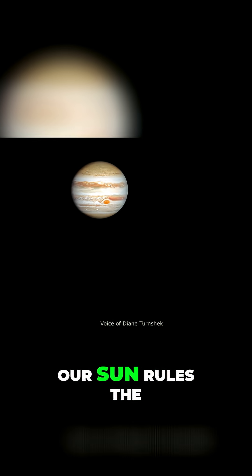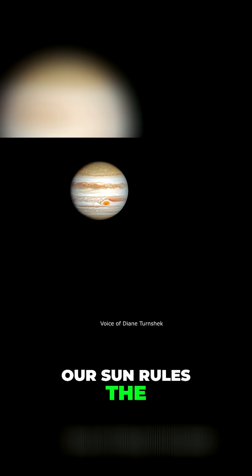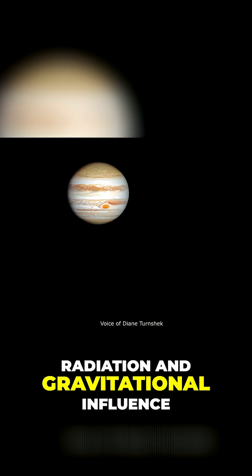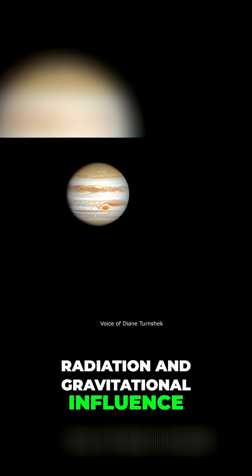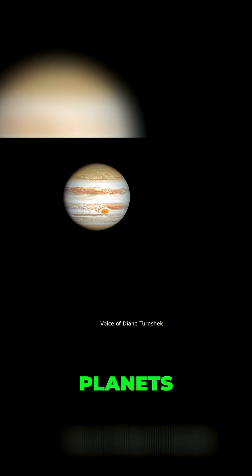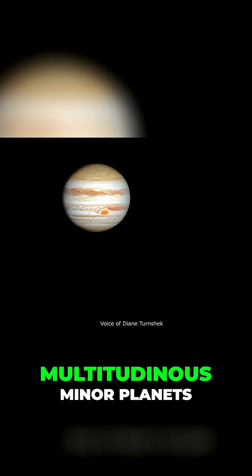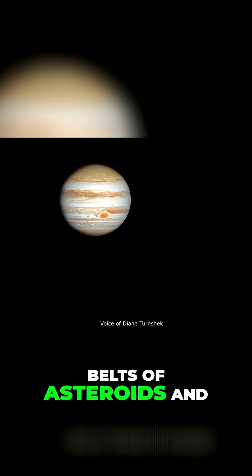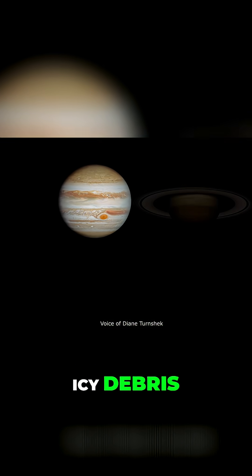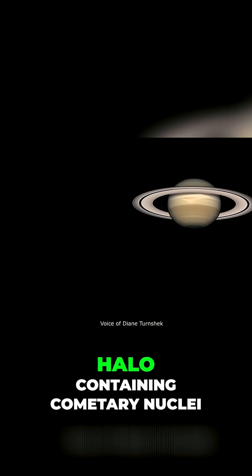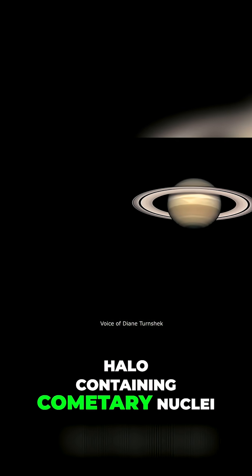Our Sun rules the solar system with its radiation and gravitational influence. The retinue of eight planets, multitudinous minor planets, belts of asteroids and icy debris, and a distant halo containing cometary nuclei.